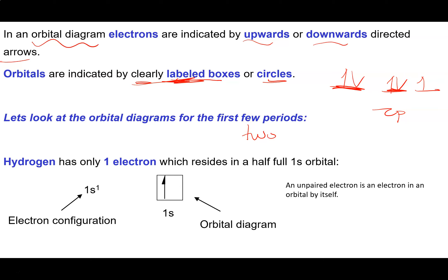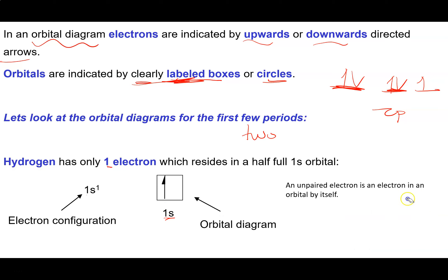To decide how many electrons you need, look at the atomic number on the periodic table. Hydrogen has atomic number 1, so it has one electron and its electron configuration is 1s¹. In the orbital diagram we draw a single box for the one s orbital and place one electron in it spin up, by convention.